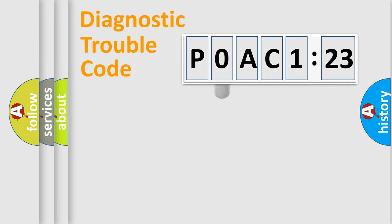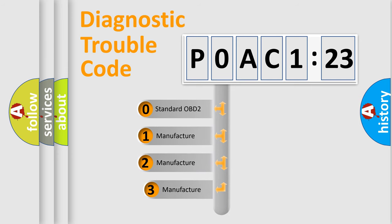The third character specifies a subset of errors. The distribution shown is valid only for the standardized DTC code.